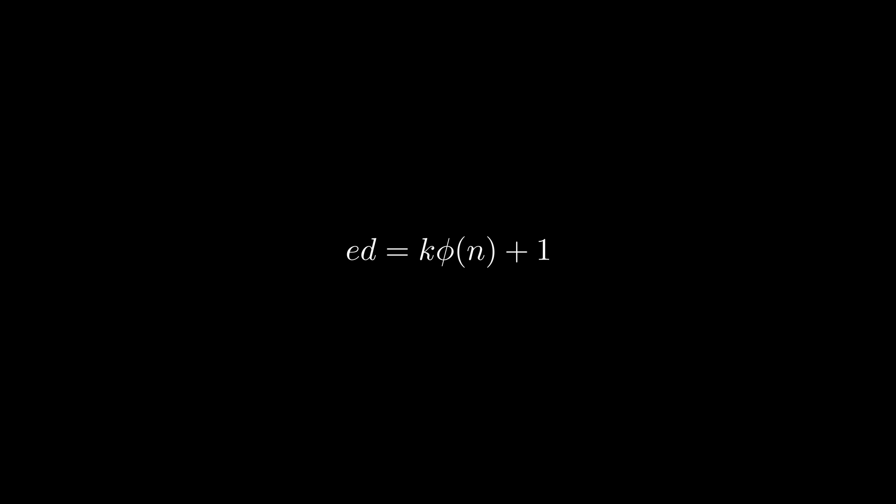This is the same as saying e times d is congruent to one mod totient n, because modulo is the remainder after division, and k totient n divides cleanly into totient n, with plus 1 as the remainder. So basically, e d is 1 more than a multiple of totient n.